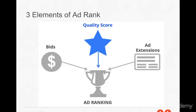There are three elements that go into Ad Rank. First is bids — how much you're willing to spend on a keyword. If it's a keyword with higher intent or potentially more lucrative for you, you're probably going to be more inclined to pay more for that keyword. If it's more of a top-of-funnel keyword where people are just doing research, you might be less likely to pay a higher price for that keyword.